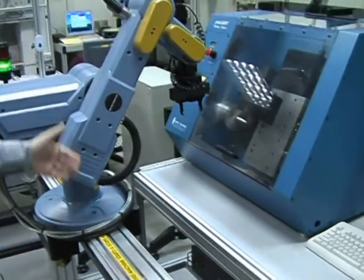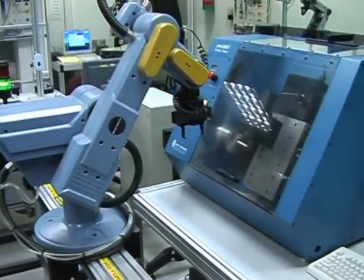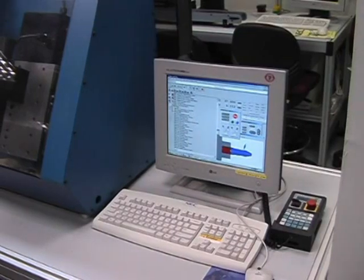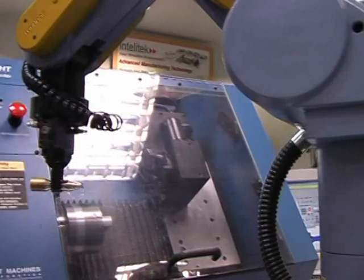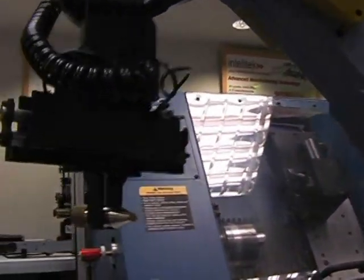The next station is the FMS turning station. The SCORBOT ER9 robot has 5 degrees of freedom. The CNC lathe is a semi-industrial machine and can process many types of raw materials.